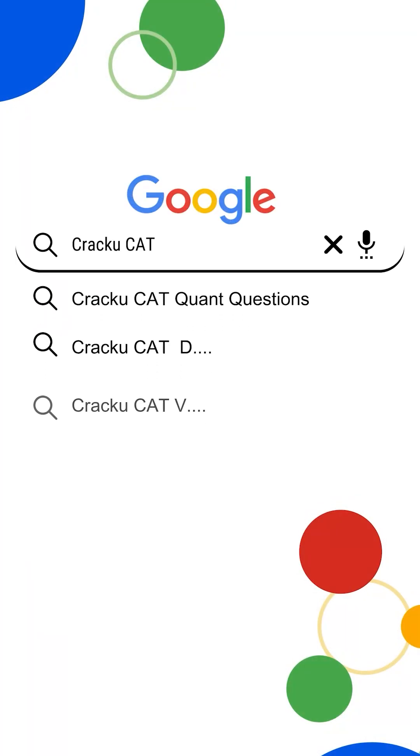If you want more memory-based questions and papers from past years CAT exam, just go to Google and search Cracku CAT previous papers.